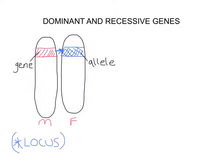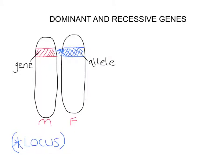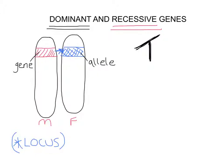Sometimes one gene can overpower another — it's stronger, if you like — and that is what we mean by a dominant gene. A dominant gene is one that can overpower another. A recessive gene is one that is weaker and is overpowered by a dominant gene. When you think of a particular characteristic or trait, we pick a particular letter to represent it. For tongue rolling, let's take the letter T. If the gene is dominant, we give it a capital T. If it's recessive, we give it a little t — a lower case version of the same letter.